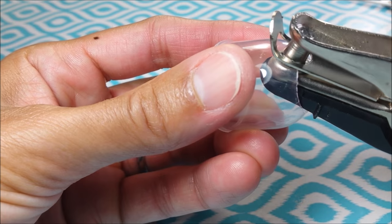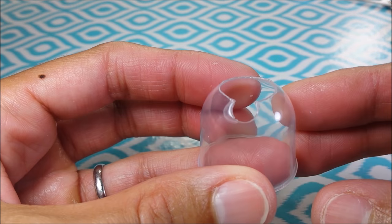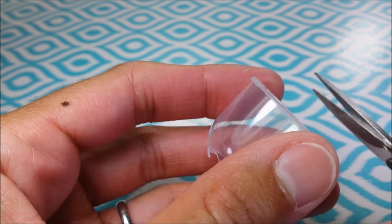Then I take a hole punch and punch out a spout. Then I'm cutting off this little rim here.